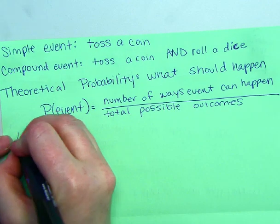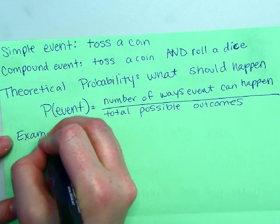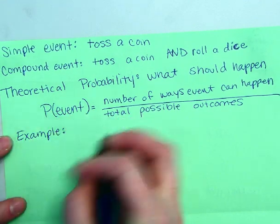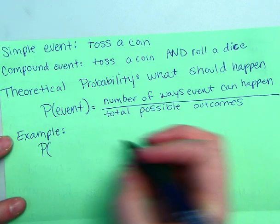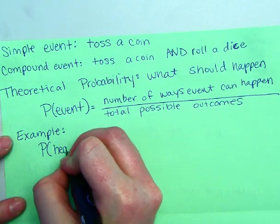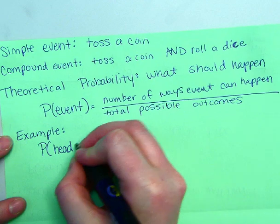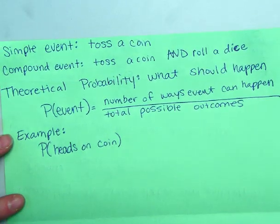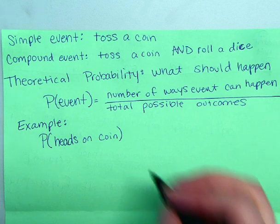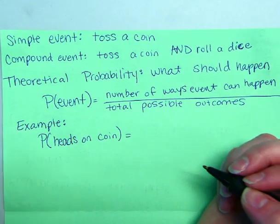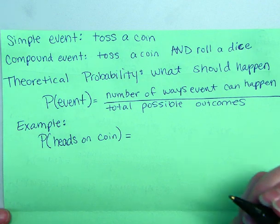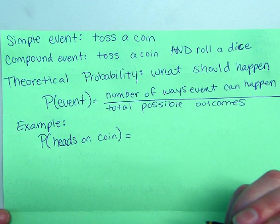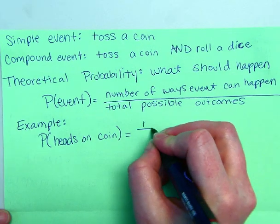Probability of whatever event it is equals number of ways event can happen over total possible outcomes. So an example would be, let's say, probability of throwing the coin and getting a heads. Probably of heads. Well, on a coin there's only one heads. There's only two outcomes, either heads or tails. So it's a one out of two.